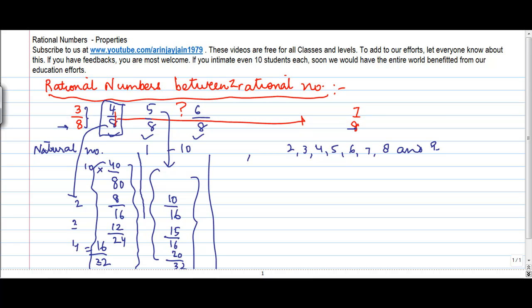So we say that there are infinite rational numbers between two rational numbers. Between any two rational numbers, you can create n numbers of rational numbers.